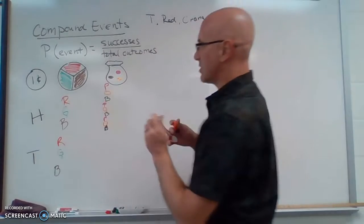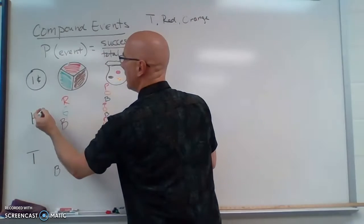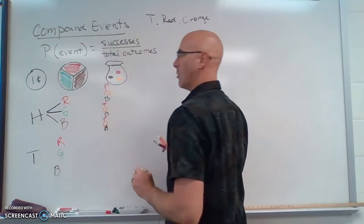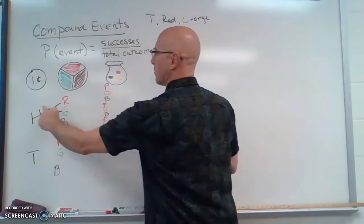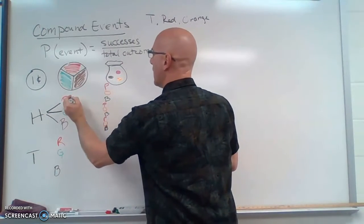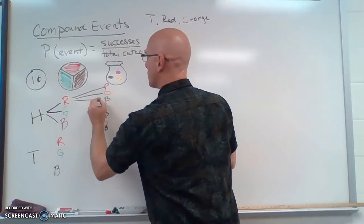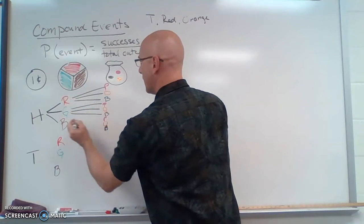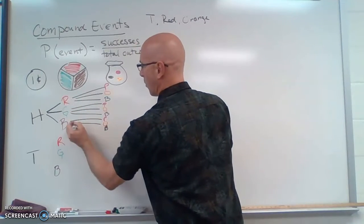So let me draw some lines so you can start to see. If I had a head on my coin, I can do red, green, or brown on my spinner. So if I did a head and a red, I can do pink, orange, and black. If I get green, pink, orange, and black. If I get brown, pink, orange, and black.